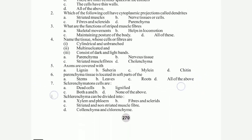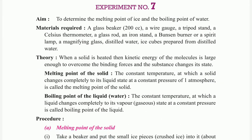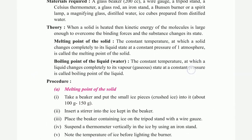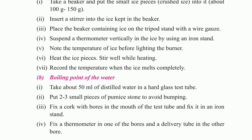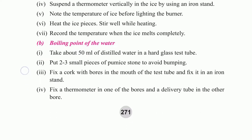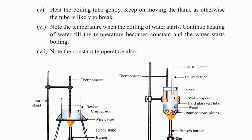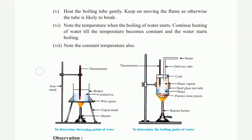Experiment number 7: to determine the melting point of ice and the boiling point of water. Materials cover melting point of solid and boiling point of water. Procedure: heat the test tube gently, keep moving, and note the constant temperature.